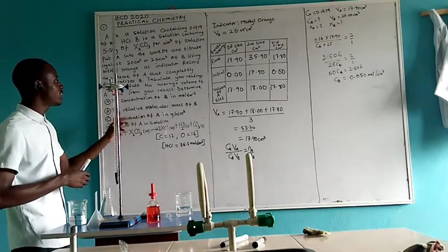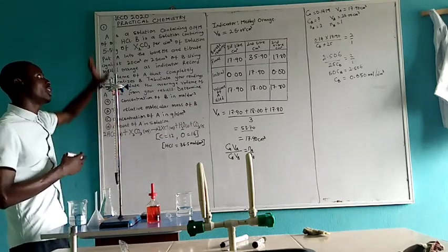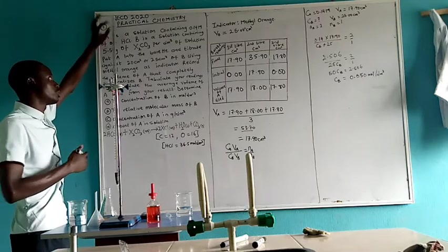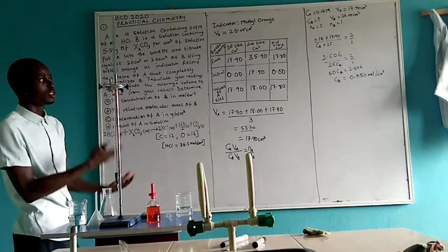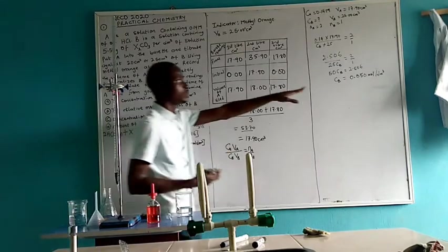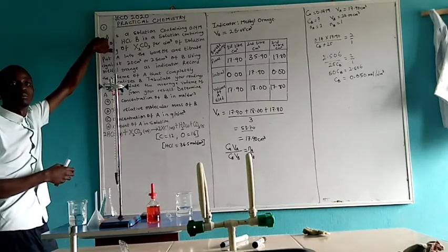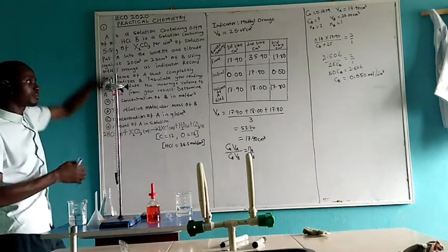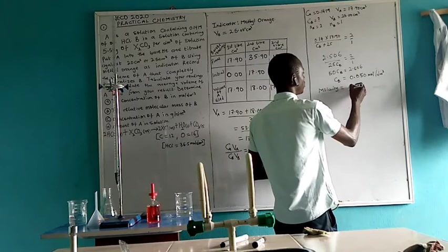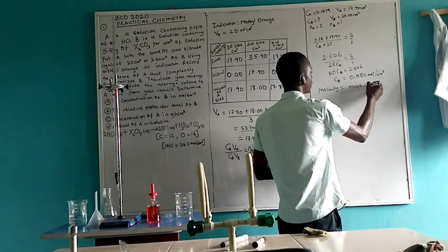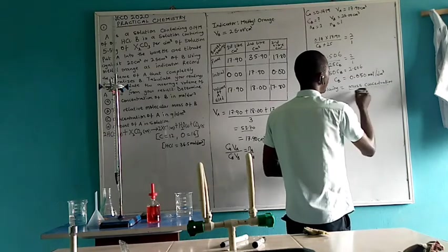The second question says find the relative molecular mass of B. Here we could not calculate the relative molecular mass of B straight away because we don't know this element X. We are meant to use the result we got for the concentration to find the molar mass. We are given the mass concentration, which is here. We use the formula: molar mass concentration equals mass concentration over molar mass.